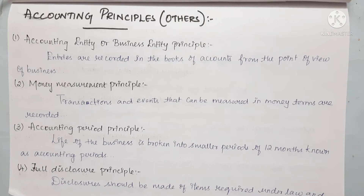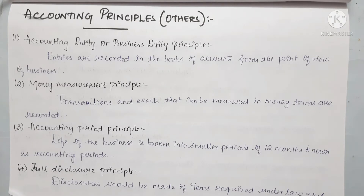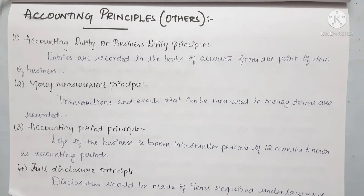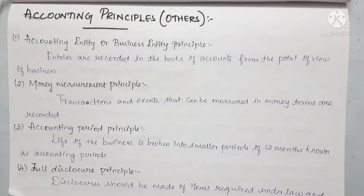The accounting period concept helps users to assess how the business is performing — how to compare income and expenses, how to improve compared to last year. Every accounting period should have regular intervals of 12 months so we can check and compare the amounts properly.